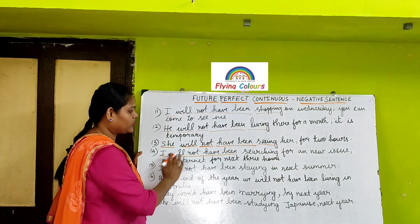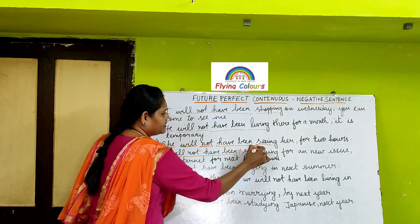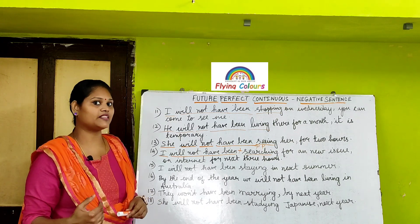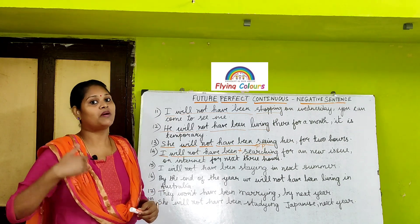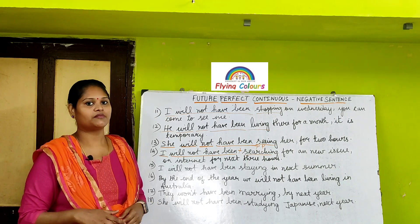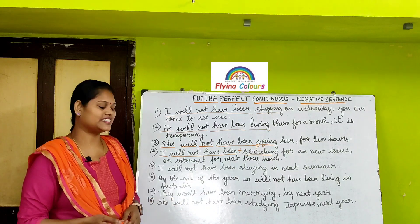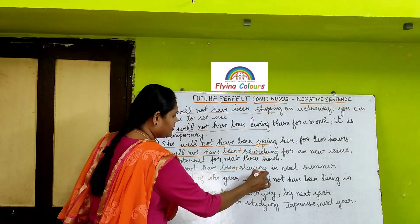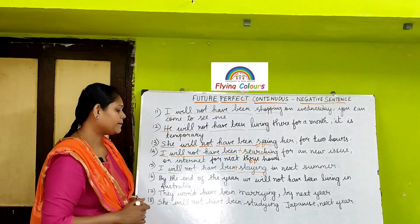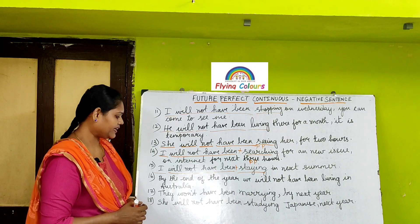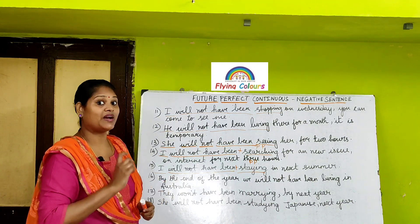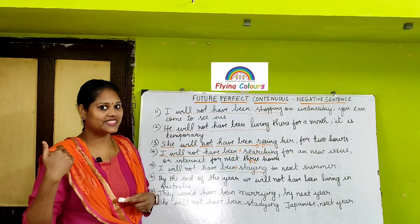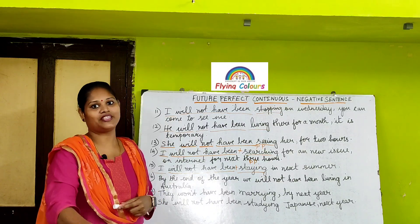In that sentence, I is the subject plus will not have been plus searching is the present participle. I will not have been staying next summer — I started staying in the past, continuing in the present, but by next summer I won't be staying here, meaning I will vacate or go to some other place. By the end of the year, we will not have been living in Australia — we started staying in the past and continuing in the present but this staying action won't continue at the end of the year.